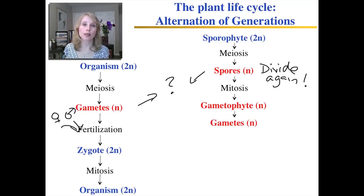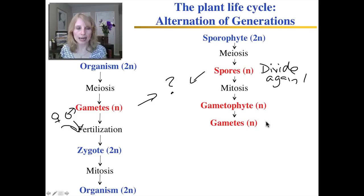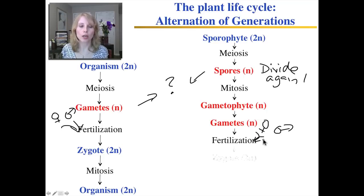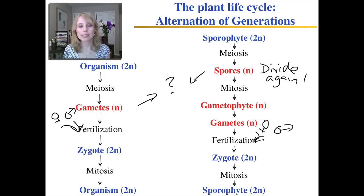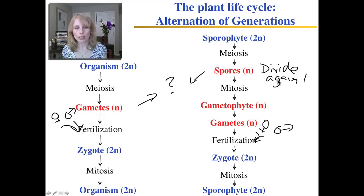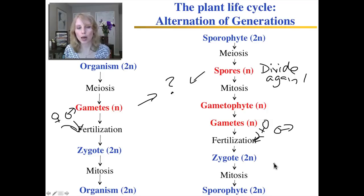Special cells within the gametophyte will become the gametes. Just like in animals, you have female gametes and male gametes, and they will unite through fertilization to produce a diploid zygote. That zygote then divides by mitosis to make a new multicellular diploid sporophyte. So you can see the plant life cycle is a lot longer and has a lot more steps, but certain things are in common.